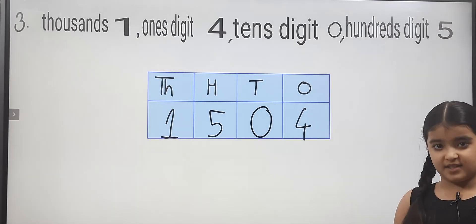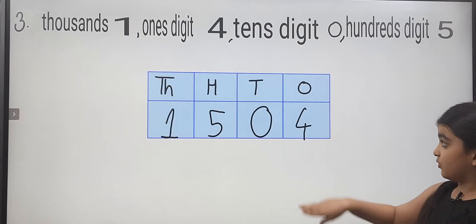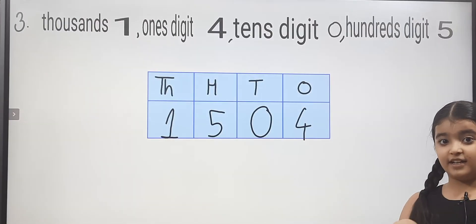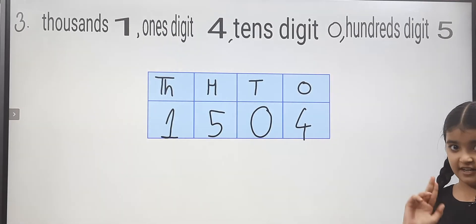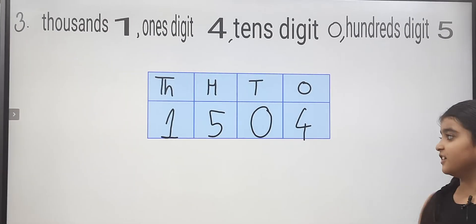This is the same point — we don't remove the house for zero. We don't know the value of zero, but we have to keep the place here.